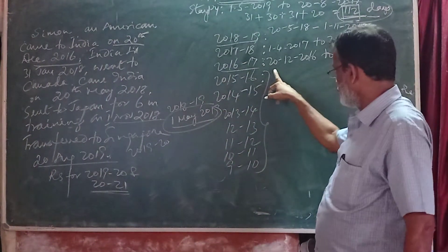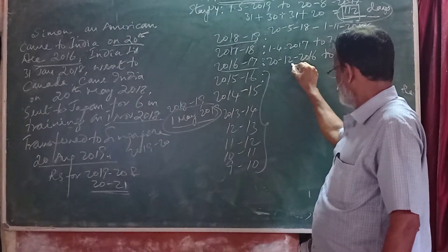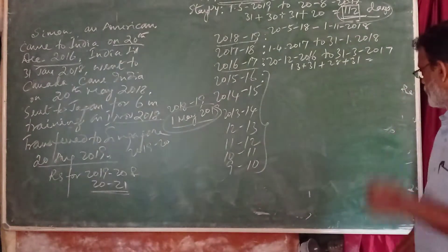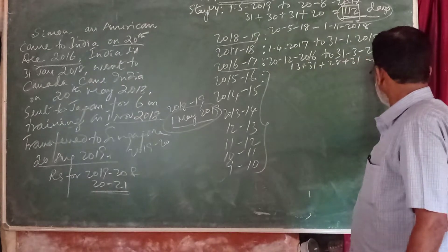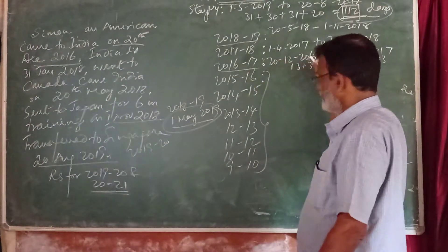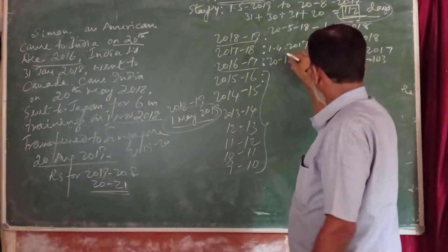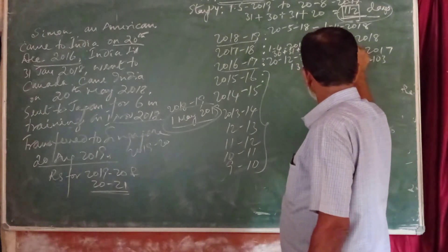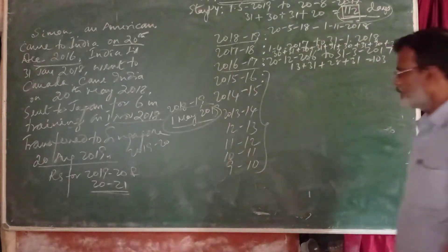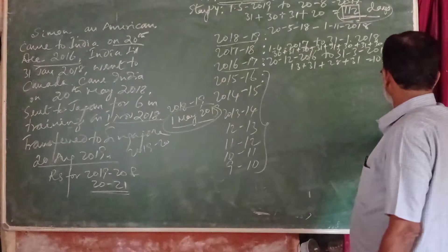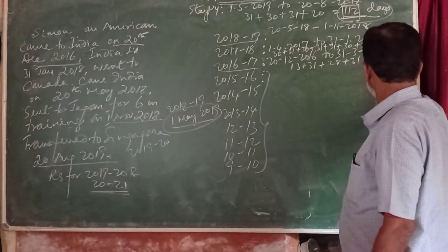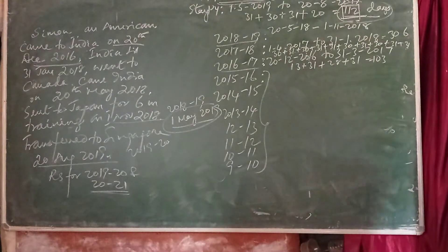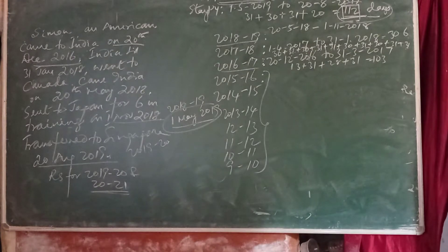During the previous year 2016-17, he was in India. During 2017-18, he was in India from April through January — counting the months: May, June, July, August, September, October, November, December, plus January. So the number of days during 2017-18 was 306 days. During previous year 2017-18, he was in India for 366 days.